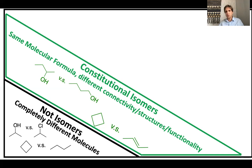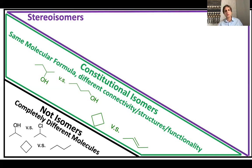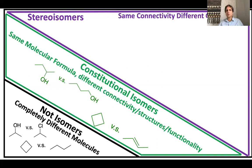Where it gets more interesting is with stereoisomers. All other types of isomers beyond constitutional isomers are different types of stereoisomers, represented in a large triangle. The black segment covers molecules that are not isomers, the green covers constitutional isomers, and every other type is a stereoisomer. Stereoisomers have the same connectivity — every atom would report the same connections — but differ in geometry and configuration.